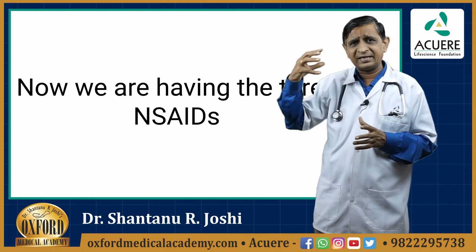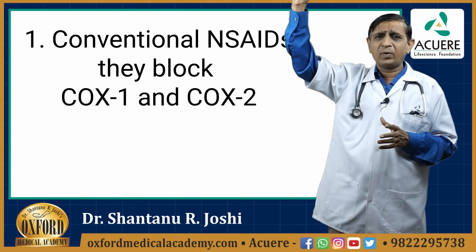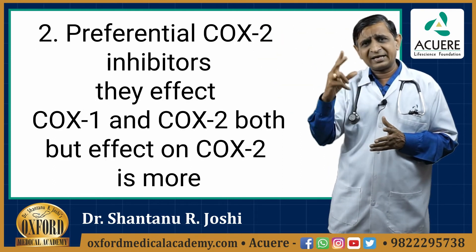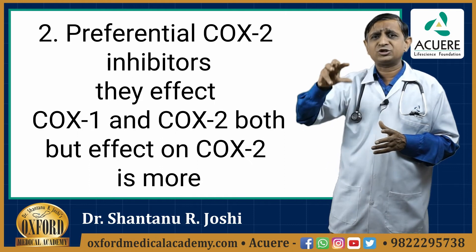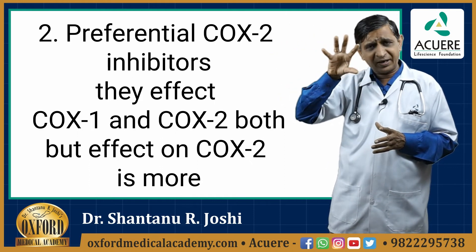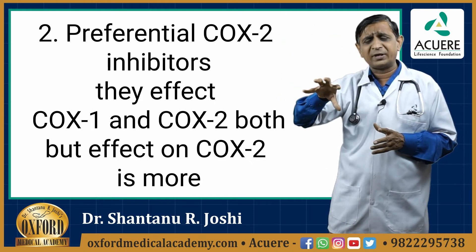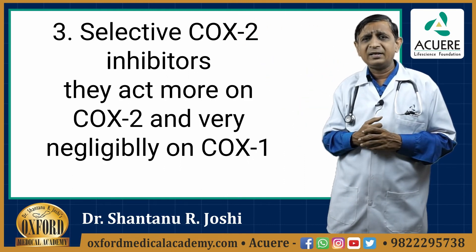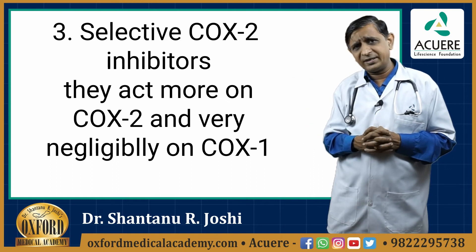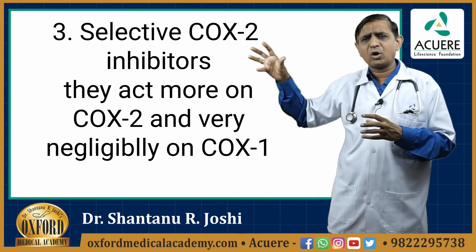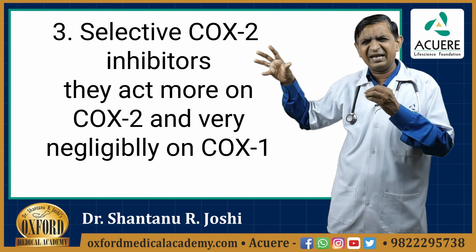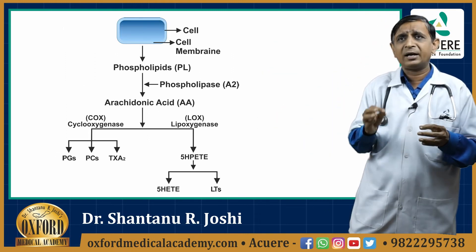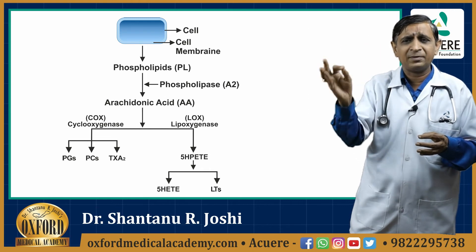So we now have three groups of NSAIDs. First, conventional NSAIDs, which block both COX-1 and COX-2. Second, preferential COX-2 inhibitors, which affect both COX-1 and COX-2 but with greater effect on COX-2. Third, selective COX-2 inhibitors, which act predominantly on COX-2 and only very negligibly on COX-1. This is a very important chart related to the arachidonic acid pathway.